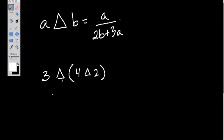So how do we deal with this? Well, whenever you're dealing with some kind of math equation, just remember your order of operations. You deal with what's in the parentheses here first. So we have 4 triangle 2. Let's break that down. Our rule is to take the first number, A, and divide it by 2 times B, or the second number, plus 3 times the first number.